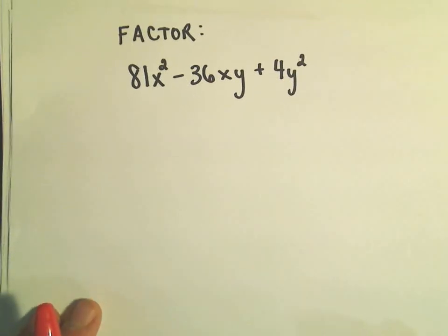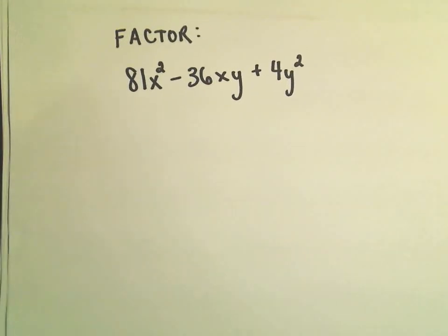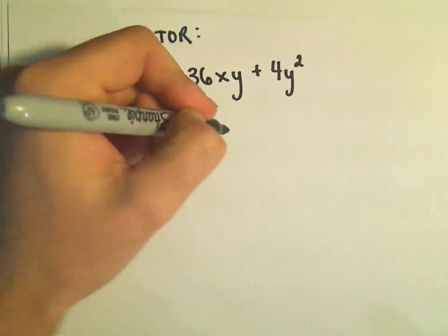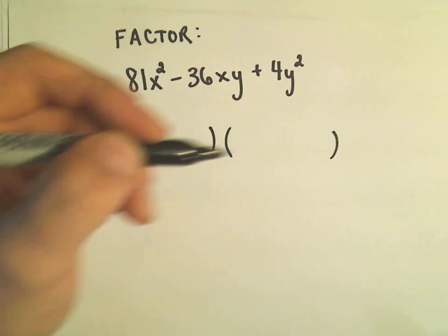What I do in these problems is I'm not immediately looking at it and recognizing it as a perfect square trinomial. In my head I'm thinking I've got to factor it. There are three terms, so I know I'm going to make two sets of parentheses.